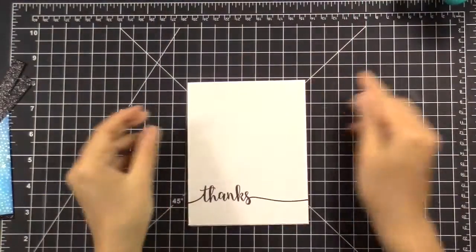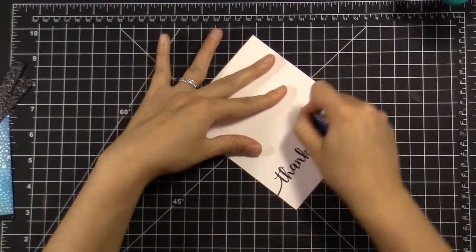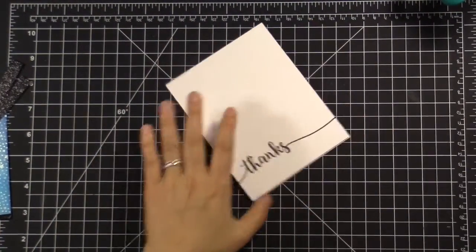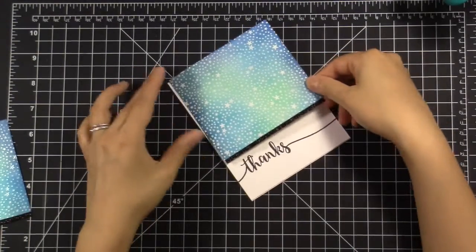I don't think I mentioned it, but my card base that I'm using today is a Simon Says Stamp 120-pound heavy-duty cardstock. I love this cardstock for card bases because it is so incredibly thick and solid, and it's just super sturdy for a card base.